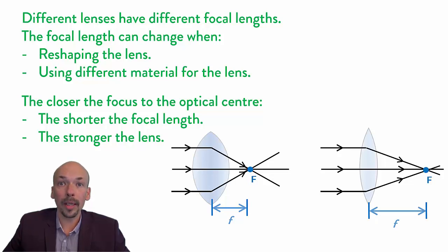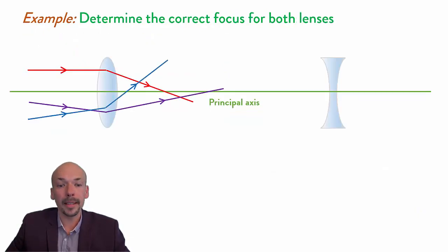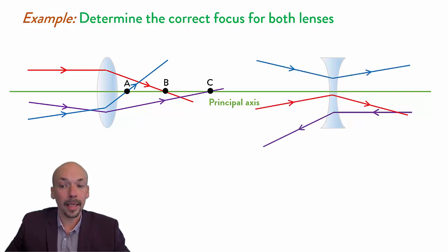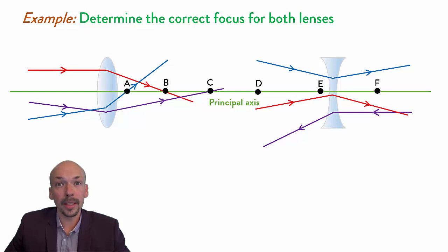To calculate the lens strength, I will have another video. Now there will be one example question which you can try yourself: determine the correct focus for both lenses. We have three light rays hitting each lens at three different points, and one of them is the focus. So try to determine which two of these six dots is the correct focus for both lenses.